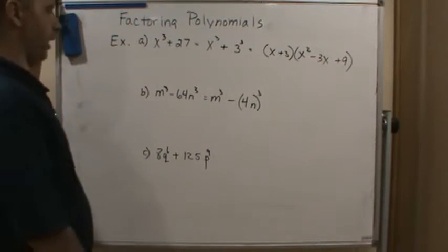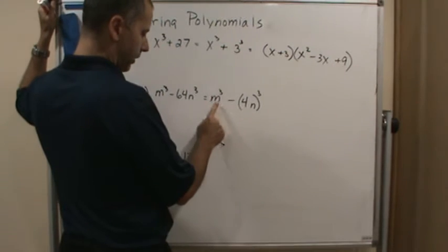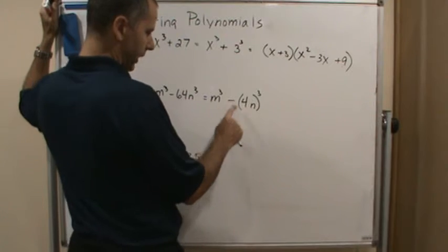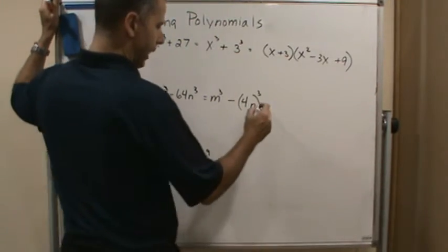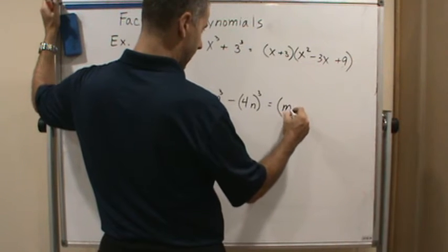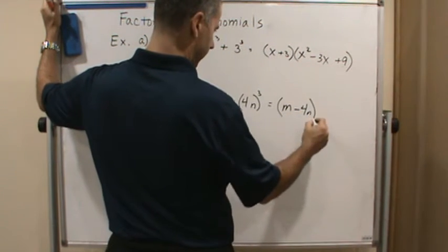So we're going to know what our a and b are, or x and y, if you will. So this is going to be m and then 4n. So now it's a subtraction. So I know that my first term is going to be m minus 4n.